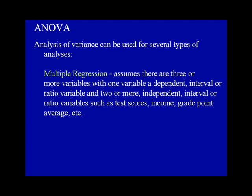Multiple regression assumes there are three or more variables, with one variable a dependent interval or ratio variable, and two or more independent interval or ratio variables, such as test scores, income, or grade point average.